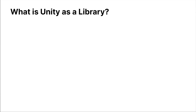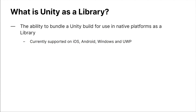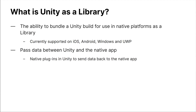Let's talk a little bit about what Unity as a Library is. At its core, it's the ability to bundle Unity and reference it in native platforms as a library. It's currently supported on iOS, Android, Windows, and the Universal Windows Platform. A key feature is being able to pass data between Unity and the native app. On the Unity side, you communicate with native applications or native APIs just as you would during any other app development. On the native side, you're able to pass in and feed data to Unity using some built-in and custom APIs that we've enabled when linking Unity through a library.